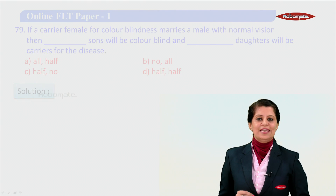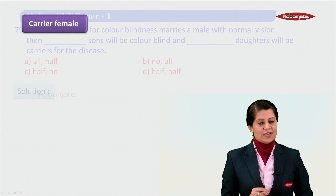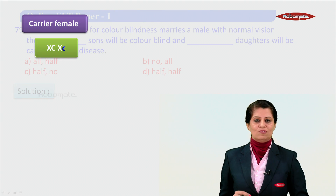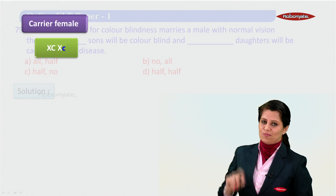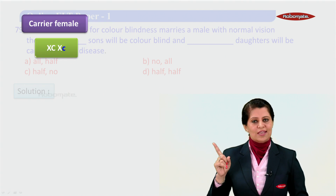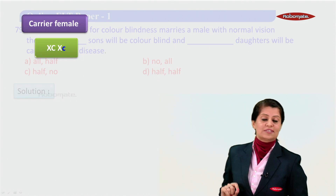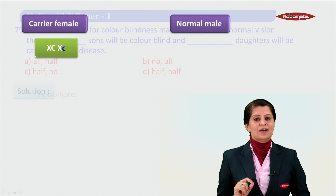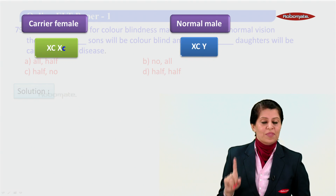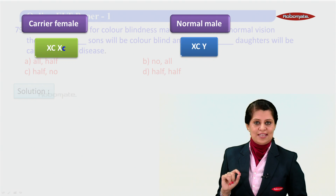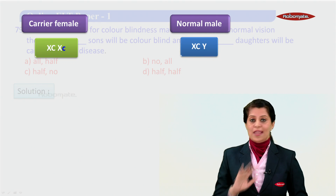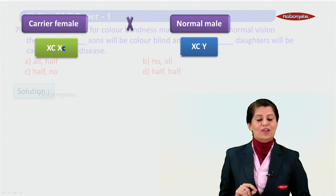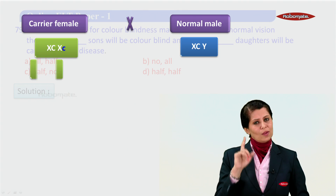For the solution, let's see the cross. First, we are talking about a carrier female — that means the genotype is going to be X^C and X^c. This small c is the disease gene, the recessive gene on the X chromosome. Normal male means XY chromosome, where X has got capital C — a normal male with no disease gene.